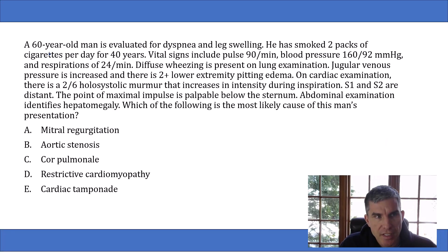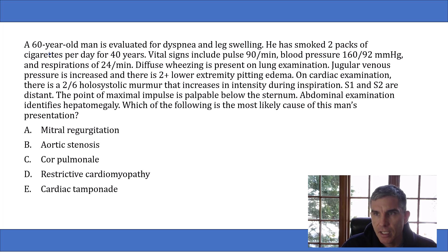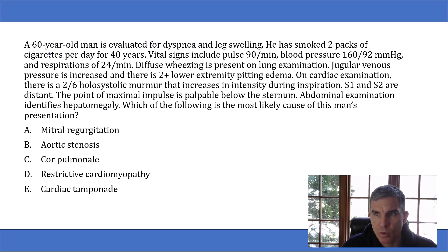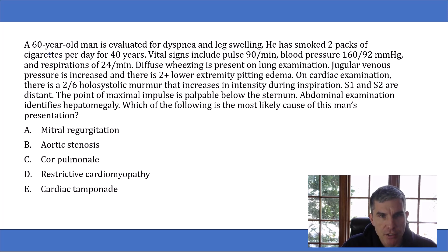The question says: a 60-year-old man is evaluated for dyspnea and leg swelling. He has smoked two packs of cigarettes per day for 40 years. Vital signs include pulse 90 per minute, blood pressure 160 over 92, and respirations of 24. Diffuse wheezing is present on lung examination, jugular venous pressure is increased, and there is 2+ lower extremity pitting edema.